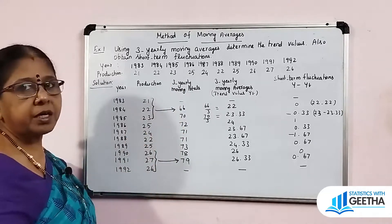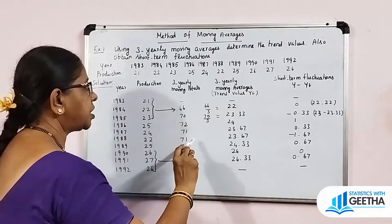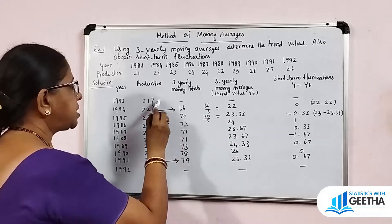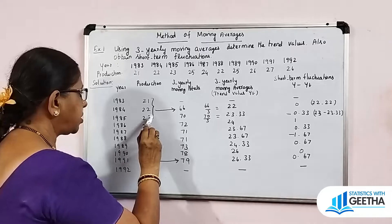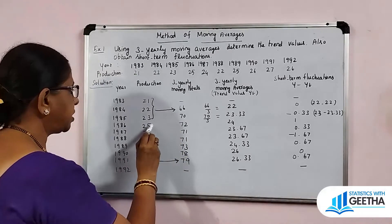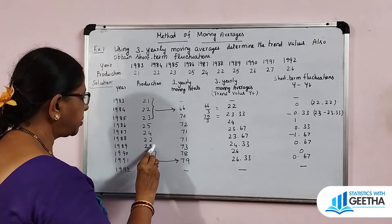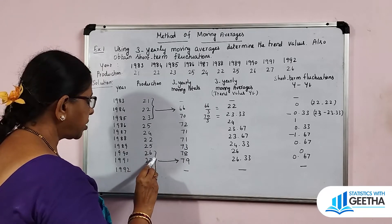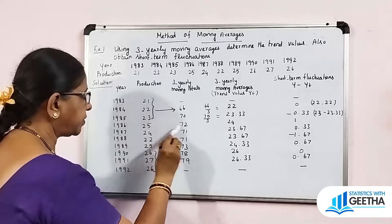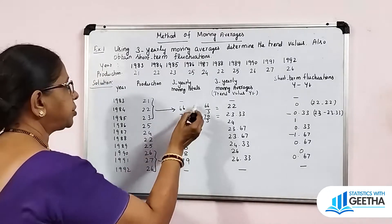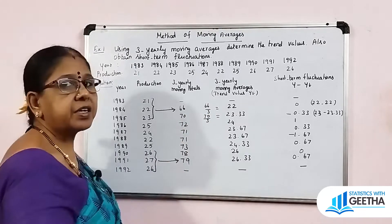For the 3-yearly moving totals, we start from the center year — in the first year there is no moving total. From the 2nd year: A+B+C is 66, B+C+D is 70, then 23+25+24 = 72, 25+24+22 = 71, 24+22+25 = 71, 22+25+26 = 73, 22+...=78. The first and last year have no moving total. These are the 3-yearly moving totals, which we then divide by 3 to get moving averages.